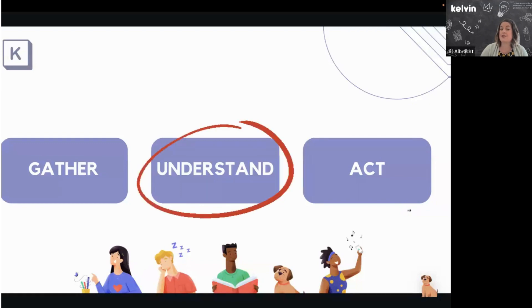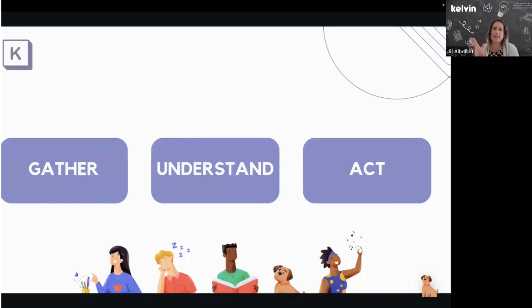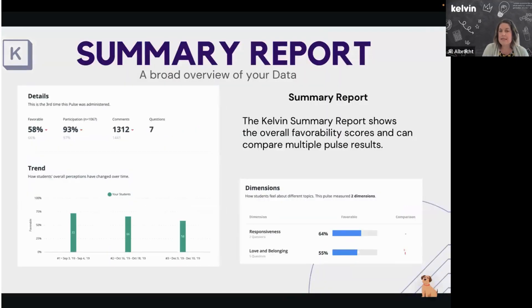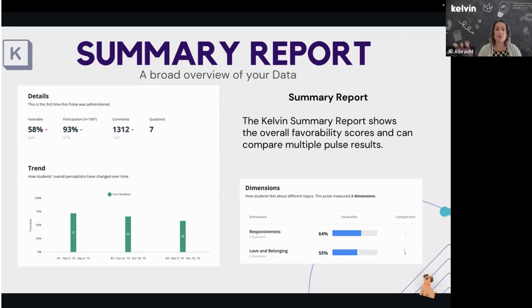This is the 'understand' portion of what you should be doing with Kelvin — you want to gather data, understand it, and then act on it. We are at the middle stage: understanding what you're looking at when you have data. When you click on the little card for the pulse, the summary report automatically opens up. It's a broad overview that gives you a high-level view of your pulse, and most of the data and graphs you can click into to dig deeper.